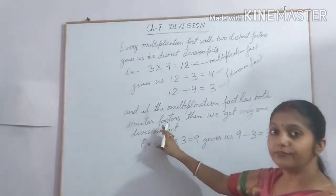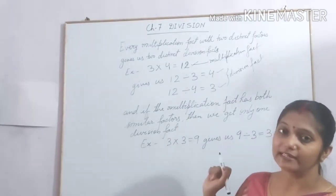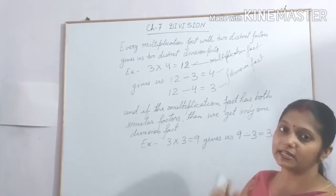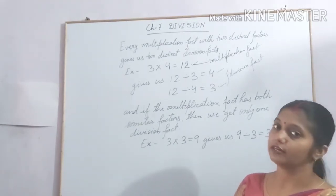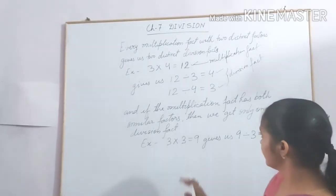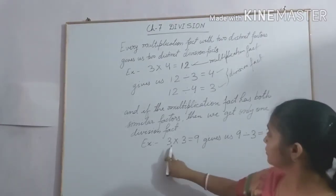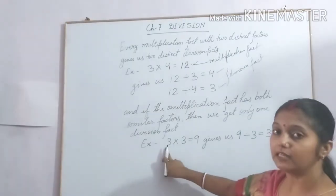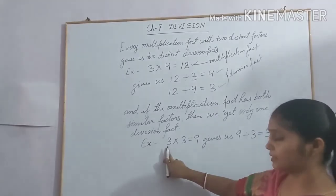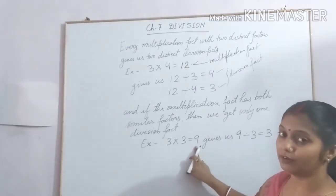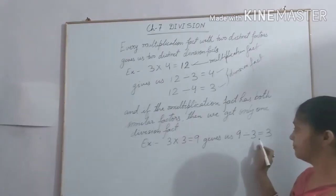And if the two factors of the multiplication fact are the same then we get only one division fact. Let us see here. The two factors are same. Here it is 3 and 3. So we get only one division fact. That is 9 divided by 3 equal to 3.